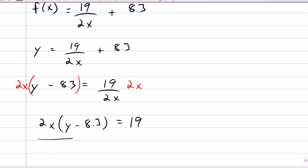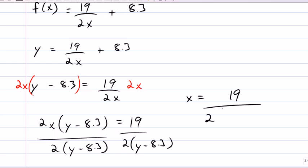I'm gonna divide both sides by 2 times Y minus 8.3. So, I have X equals 19 over 2 times Y minus 8.3. And that should be F inverse.